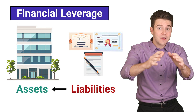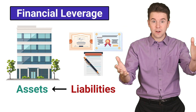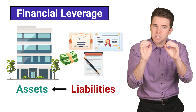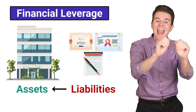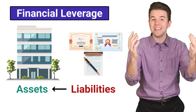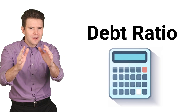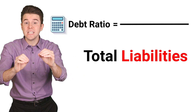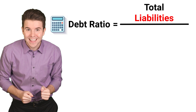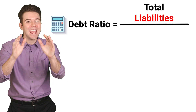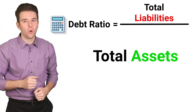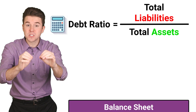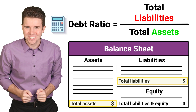The higher the financial leverage, the higher the risk, because liabilities must be repaid and require interest payments. To calculate the debt ratio, we take the company's total liabilities and divide them by total assets. Both of these numbers can be found on the company's balance sheet.